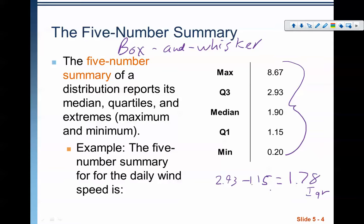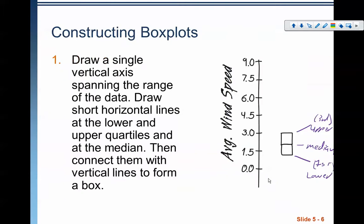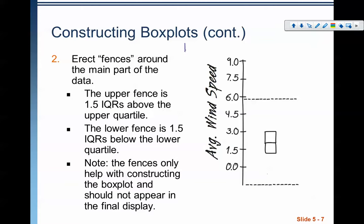To figure out what 1.5 interquartile ranges is, we take that 1.78 and we multiply it by 1.5. So we're going to take 1.78 times 1.5 and we're going to add that on to the upper quartile to find this fence. And then we're going to take 1.78 times 1.5 and we are going to subtract that from the lower quartile to find this fence. Any numbers outside of that range are considered outliers. So if it's outside the fence, it's an outlier.